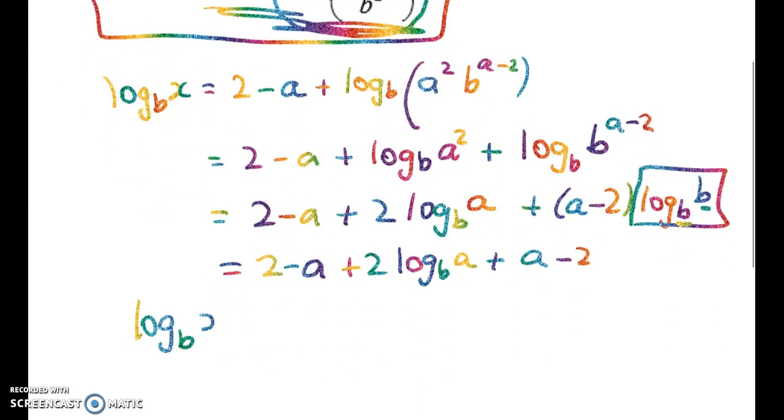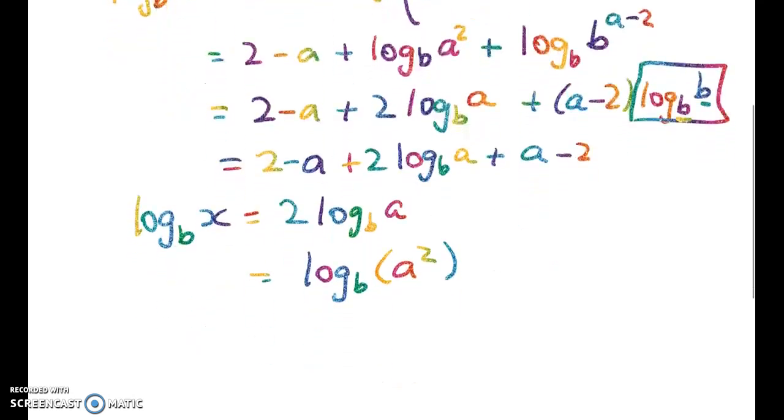Log to base b of x is equal to 2 log to base b of a, which is the log to base b of a squared. So x is equal to a squared. So that's that one done. Right, the next one.